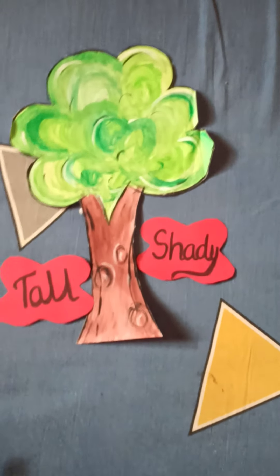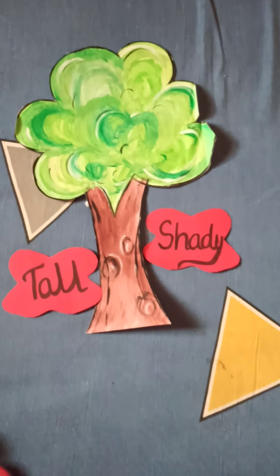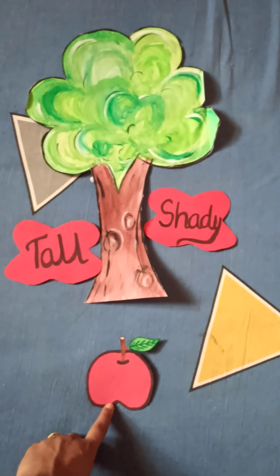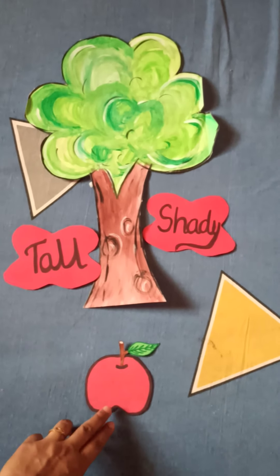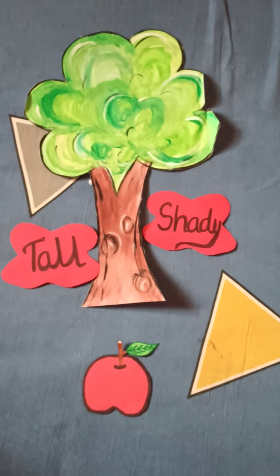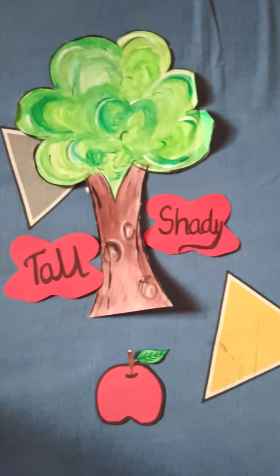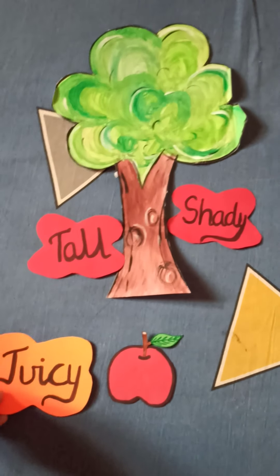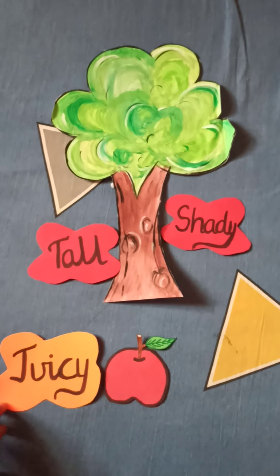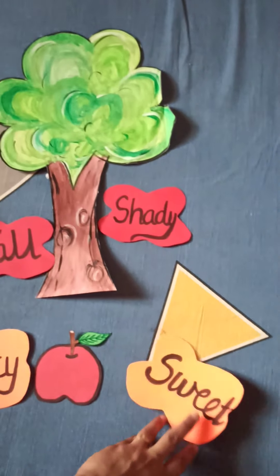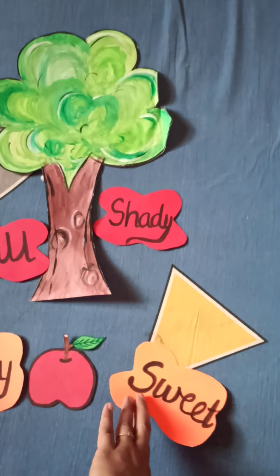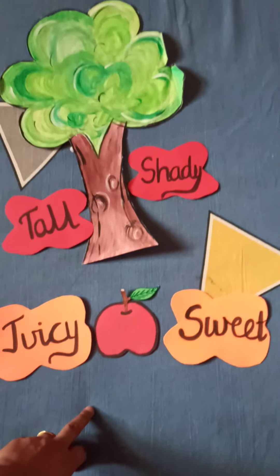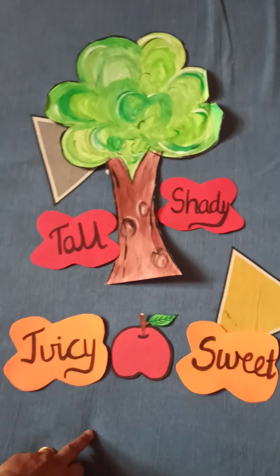Let us take one more example. Can you see what is this? This is an apple. Now can you tell me something about apple? The apple is very juicy. It is very sweet. This apple is very sweet.